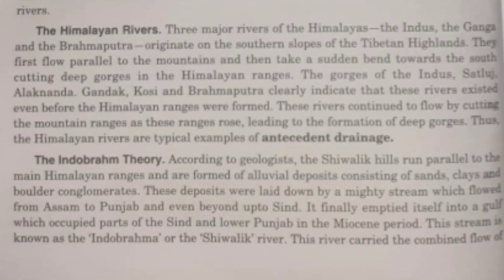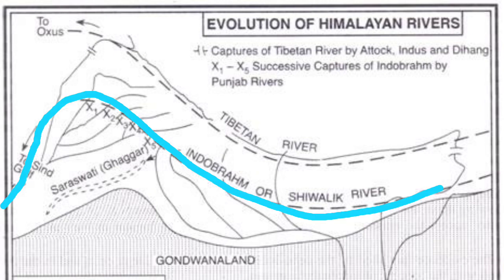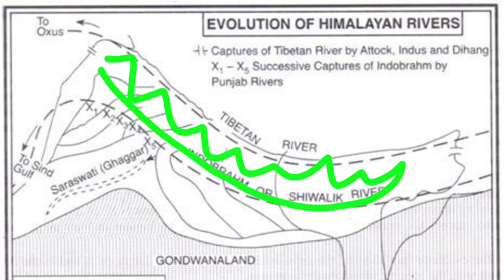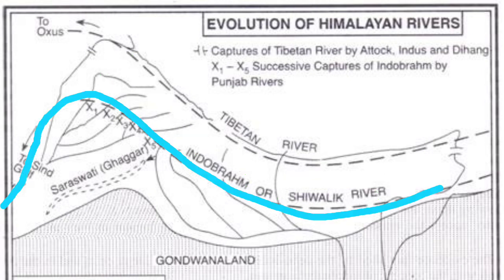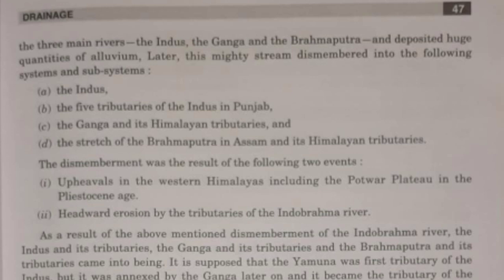According to geologists, there is a theory called the Indo-Brahma theory, which proposes that there was a mighty river that used to flow from Assam to Punjab and from Punjab to the south of Sindh, finally draining into the Gulf of Sindh. The Shivaliks are also believed to have been formed by the deposition of this mighty river, also called the Shivalik river. Later, this mighty river got dismembered into the following river systems: the Indus and its tributaries, the Ganga and its tributaries, and the Brahmaputra in Assam and its Himalayan tributaries.